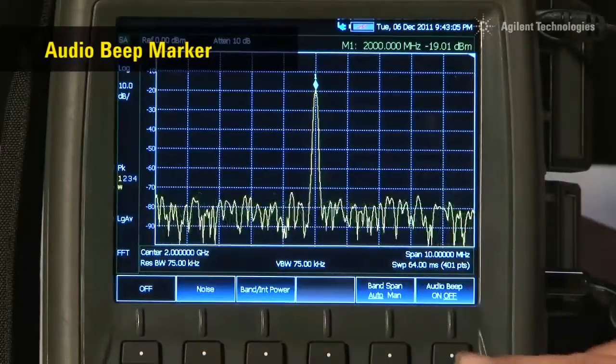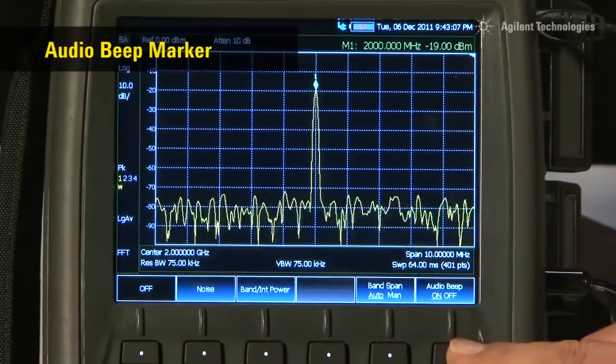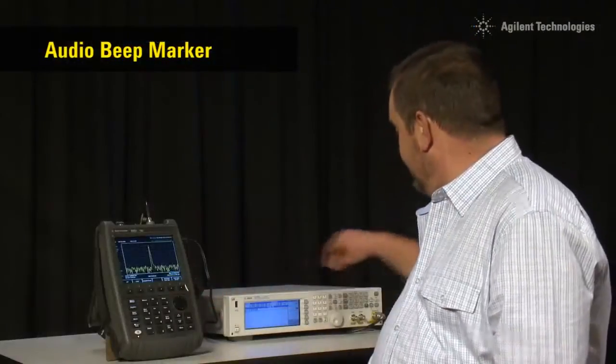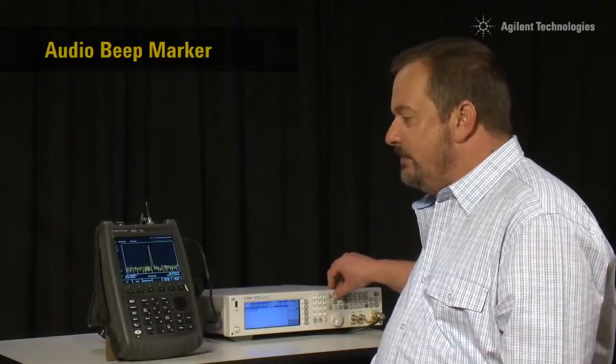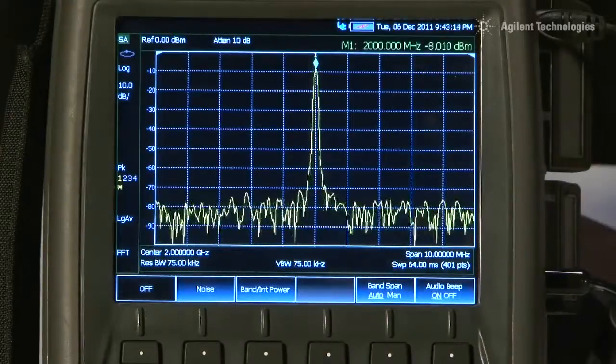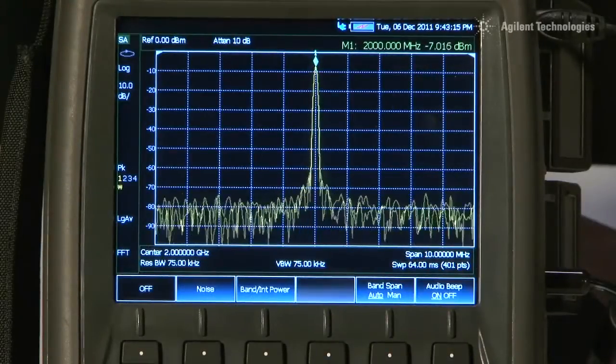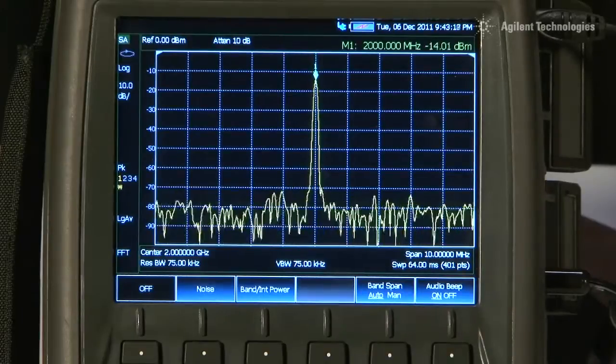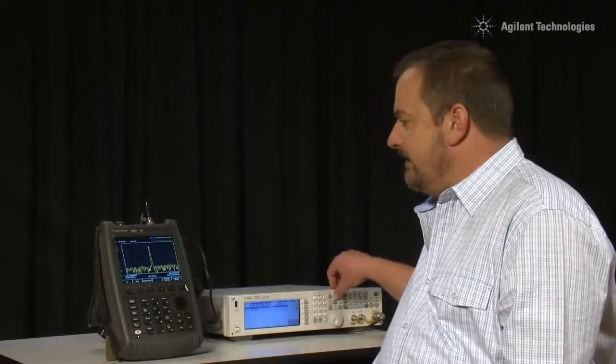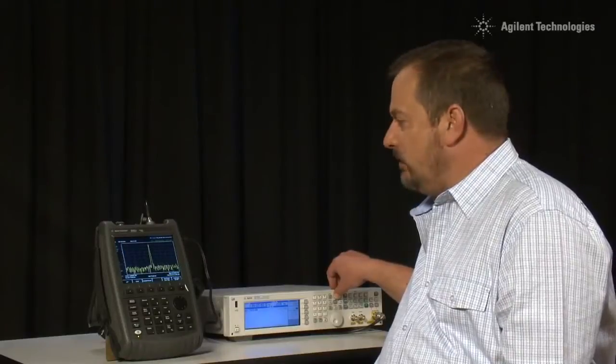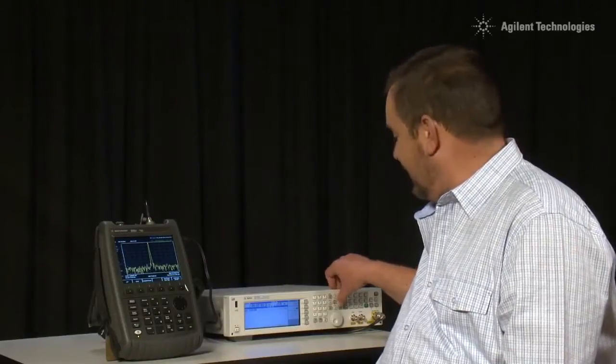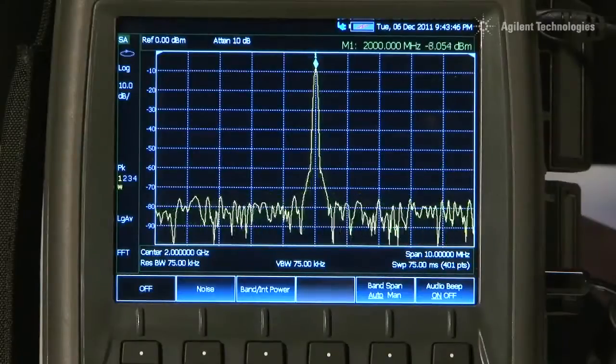And here is a marker function I especially like. If we are aligning a directional antenna, such as a Yagi or a satellite dish, we can turn on audio beep. The pitch and rate of the beep corresponds to the amplitude of the received signal. This makes aligning or peaking an antenna incredibly simple. You don't have to watch the screen of the spectrum analyzer as you are making the adjustments.